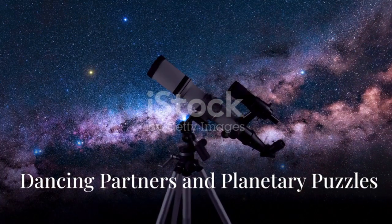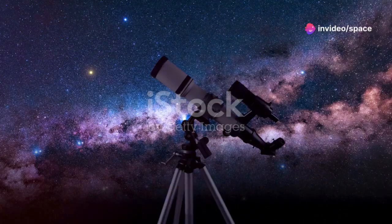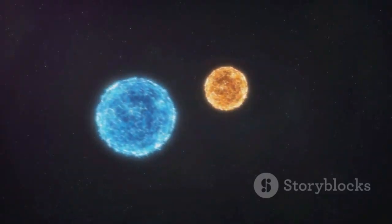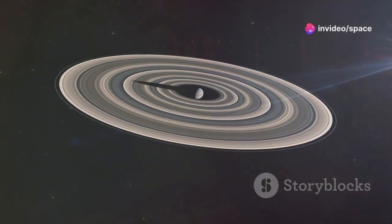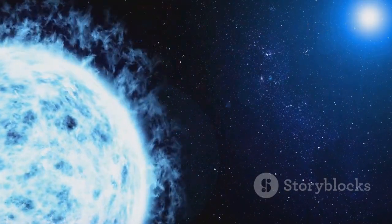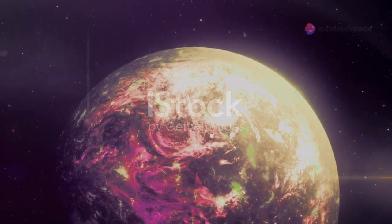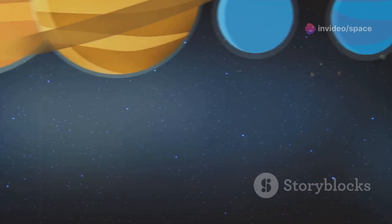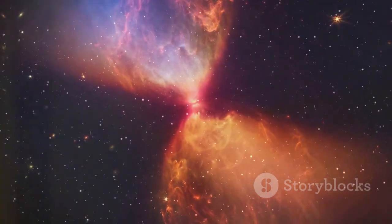Dancing Partners and Planetary Puzzles. Binary star systems where two stars orbit each other are common in the Milky Way galaxy. JWST is providing new insights into the dynamics of these systems and the planets that may form around them. The telescope's observations are revealing the complex gravitational interactions between binary stars. They are also helping us understand how planets can form and survive in these environments. JWST has also observed gas giant planets orbiting binary stars. These observations are challenging our understanding of planet formation. They suggest that planets can form and exist in more extreme environments than previously thought. The study of binary star systems and their planets is providing valuable clues about the diversity of planetary systems in the galaxy. It is also helping us refine our models of planet formation and evolution.